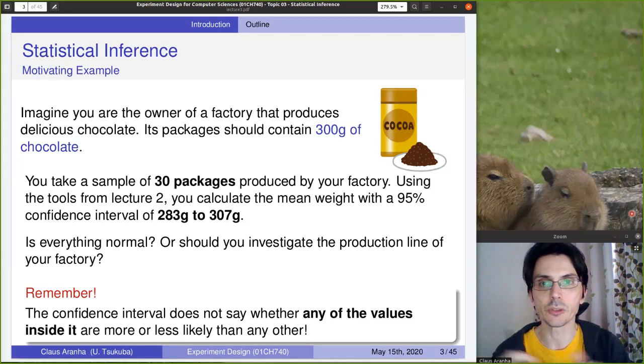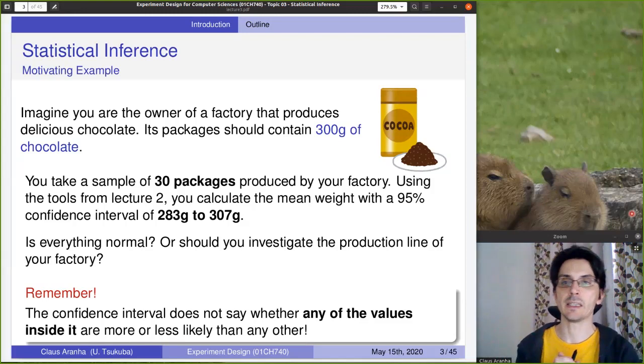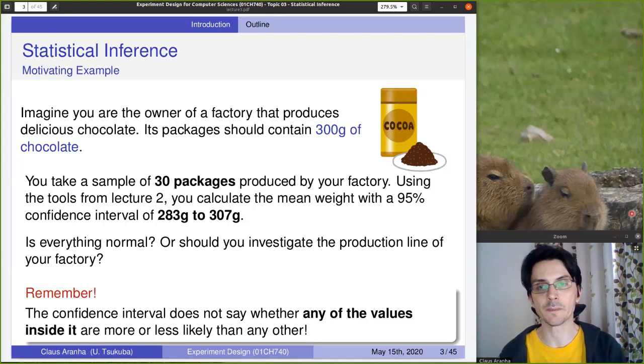You produce 30 packages of your chocolate and you measure, so that's your sample. And then using the sample, the tools from lecture two, you calculate the mean, the mean weight of the sample. And with 95% confidence interval, the confidence interval for the mean estimator is from 283 to 307 grams.